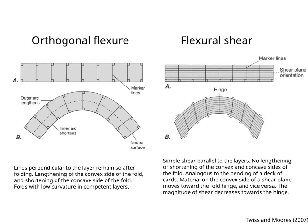In orthogonal flexure, lines perpendicular to the layer remain so after folding. There is lengthening of the convex side of the fold and shortening of the concave side of the fold. This kinematic model is characteristic of folds with low curvature in competent layers.